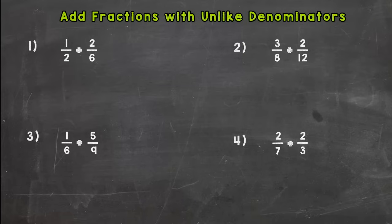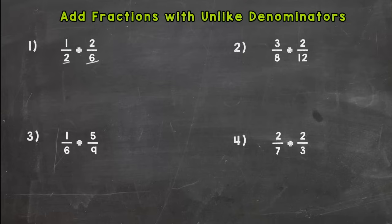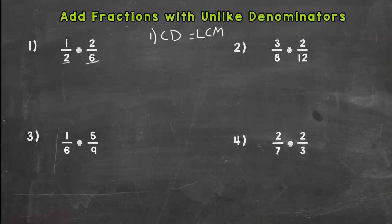We start with number one: one-half plus two-sixths. The first thing you should do when you see an addition or subtraction fraction problem is check to see if they have common denominators. If they do, you can add or subtract. We have a two and a six — those aren't the same — so we cannot add yet. We need to find a common denominator. If you don't know what a least common multiple is, I did do an instructional video on that you can check out.